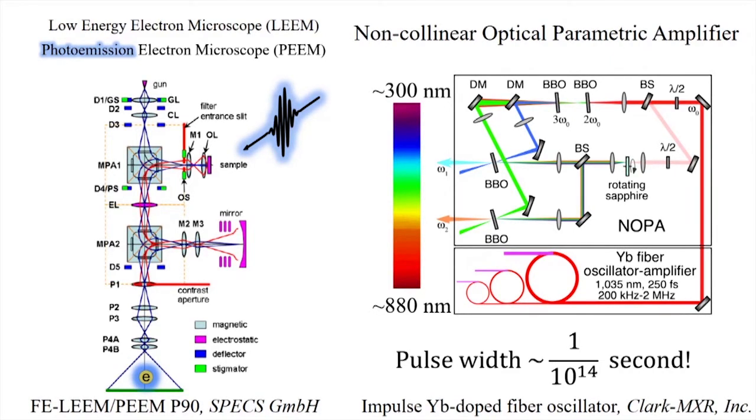To produce such short light pulses and tune into plasmon resonance, we use a wavelength tunable femtosecond laser system, which works on a non-collinear optical parametric amplifier principle, and is pumped by an impulse fiber laser system that is manufactured by Clark MXR.